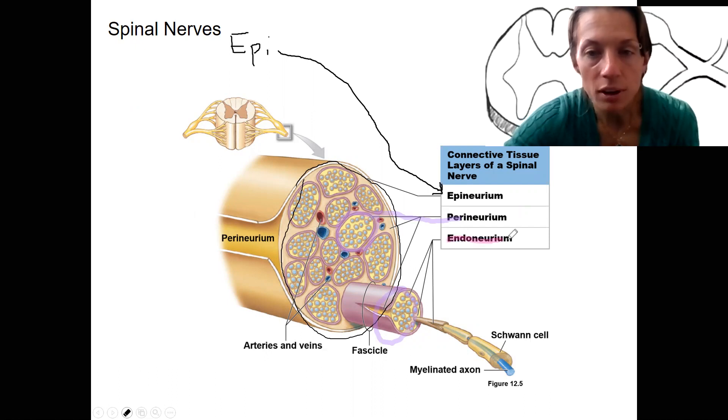So the smallest unit here is then going to be the endoneurium, and this is going to surround each axon. So here is our endoneurium. Inside is what endo refers to. So both of the layers of the connective tissue layers of a spinal nerve.